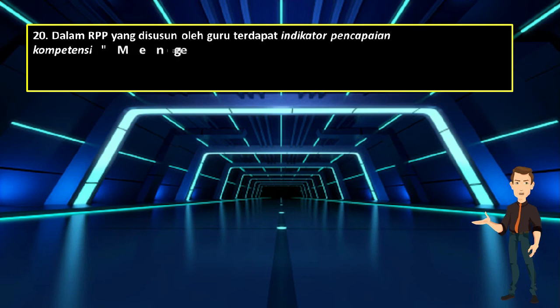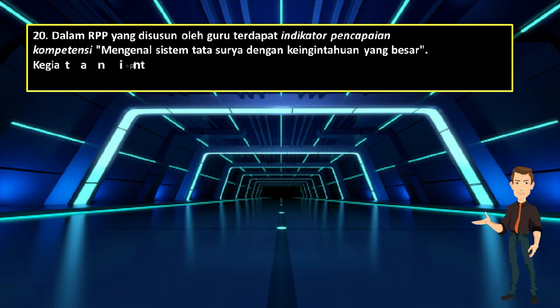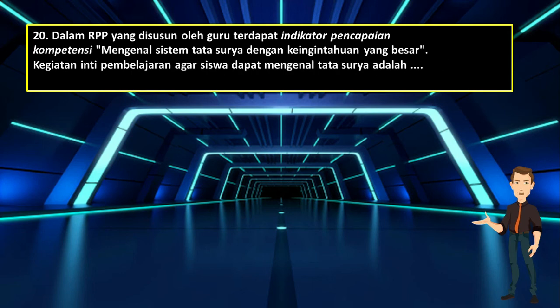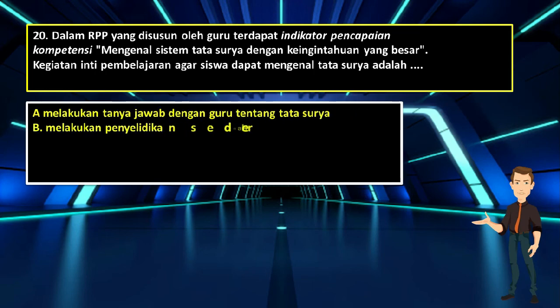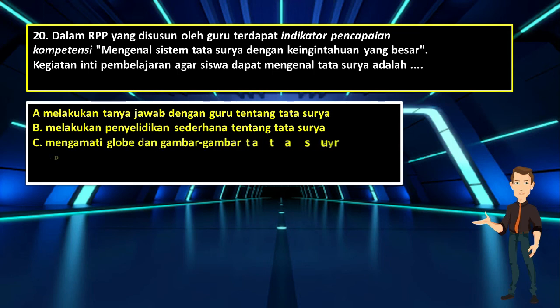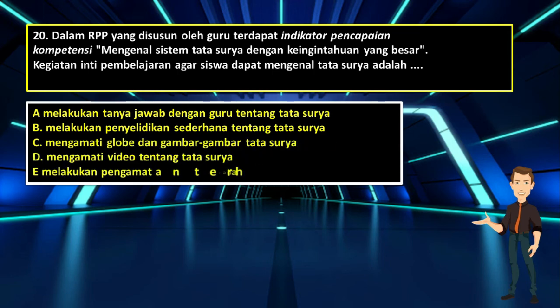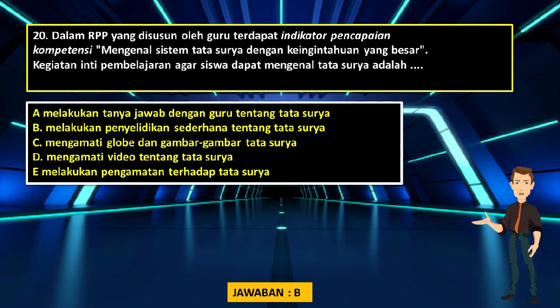Nomor 20. Dalam RPP yang disusun oleh guru terdapat indikator pencapaian kompetensi: mengenal sistem tata surya dengan rasa ingin tahu yang besar. Kegiatan inti pembelajaran agar siswa dapat mengenal tata surya adalah: A. Melakukan tanya jawab dengan guru tentang tata surya; B. Melakukan penyelidikan sederhana tentang tata surya; C. Mengamati globe dan gambar-gambar tata surya; D. Mengamati video tentang tata surya; E. Melakukan pengamatan terhadap tata surya. Jawabannya adalah B: Melakukan penyelidikan sederhana tentang tata surya.